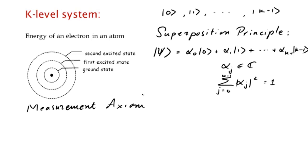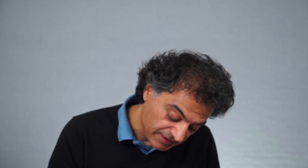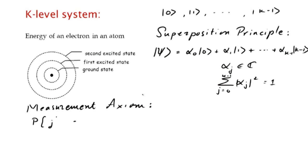One way we can interpret this is through the measurement axiom, which says that when we measure the system, or when we look at it, the probability that the outcome is j is the magnitude of alpha_j squared. So the fact that the state is normalized means that, with probability 1, we see some outcome j between 0 and k minus 1.